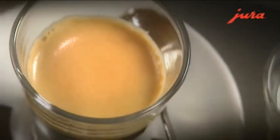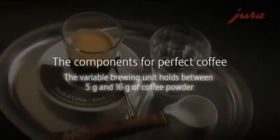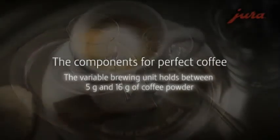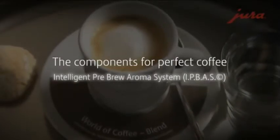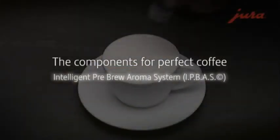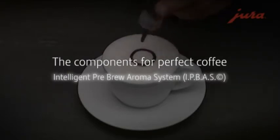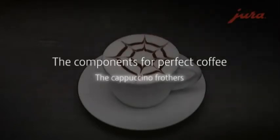When Jura launched the first Impressa in 1994, it set a milestone. The variable brewing unit can process between 5 and 16 grams of coffee powder. There is also the pre-brew process, first used in professional kitchens and perfected by Jura, known as IPBAS, Intelligent Pre-Brew Aroma System.